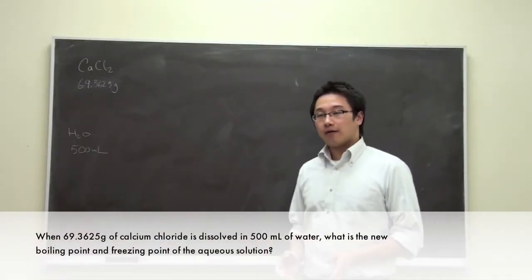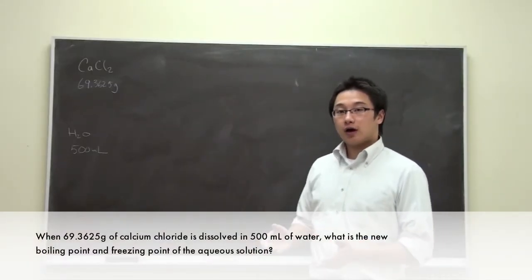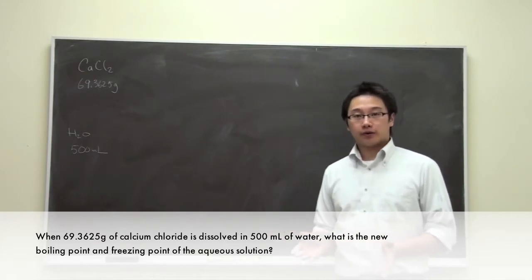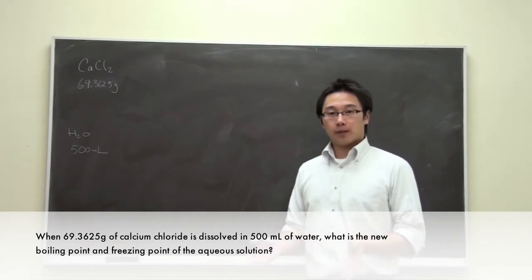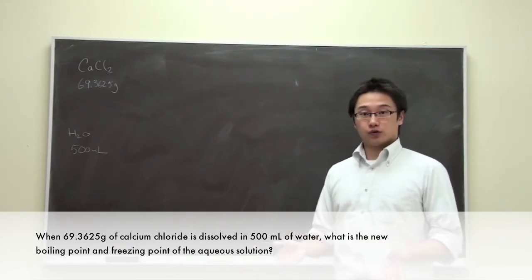On question 9, we have calcium chloride dissolved in 500 ml of water, and we would like to find out what is the new freezing point and the new boiling point of the solution.